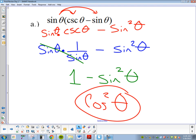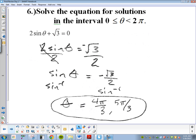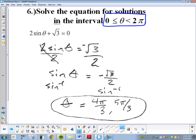Morgan? Okay. Questions on 5? Okay? Number 6. Solve the equation for the solutions in the interval 0 to 2 pi. Notice that it does say 2 pi.